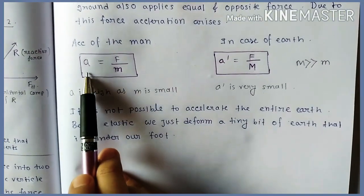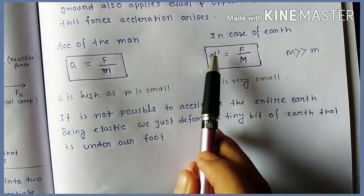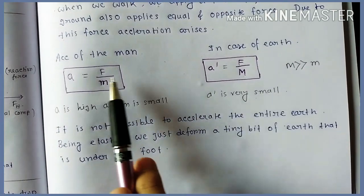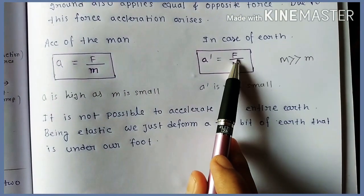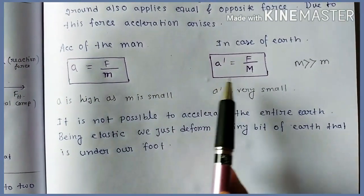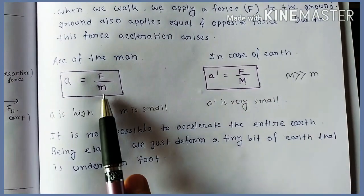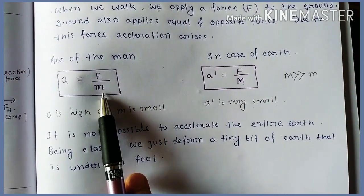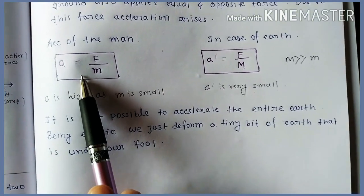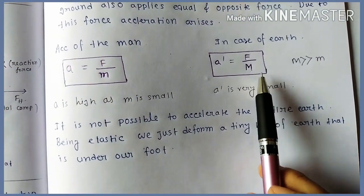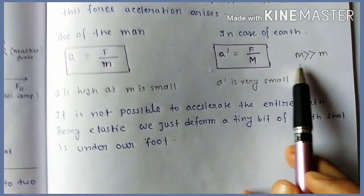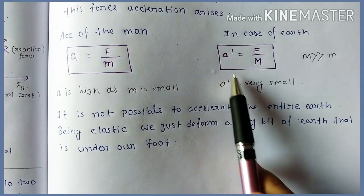The acceleration of the person is a and the acceleration of the Earth is a'. The force is equal in both cases, but mass is not the same. In the case of the person, mass is very small, so acceleration is very high. But in the case of Earth, M is much greater, so acceleration is very small.